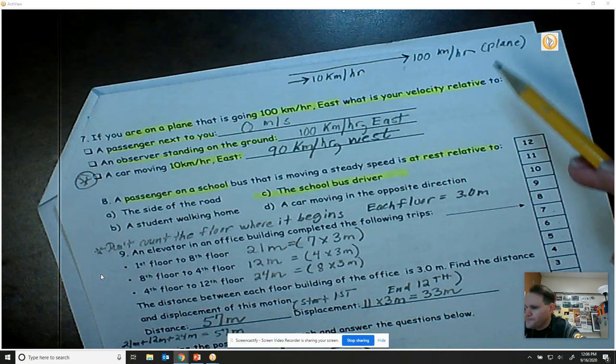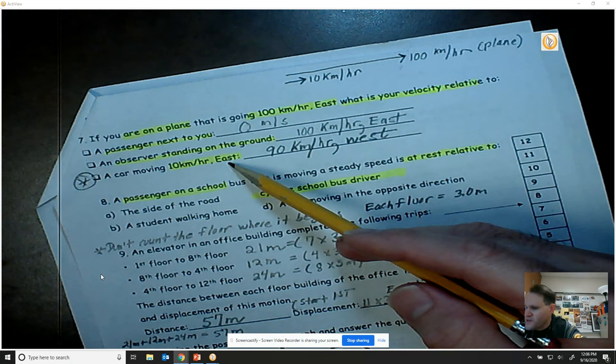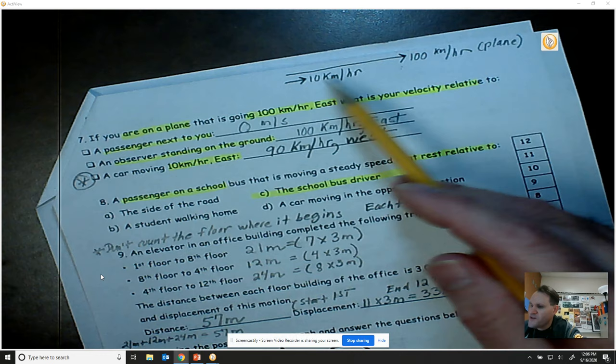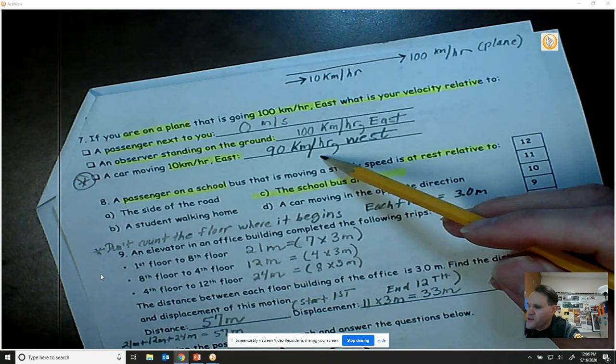Now, what about a car moving? What would be your velocity relative to a car moving at 10 kilometers per hour going to the east? Well, it's going to be 90 kilometers per hour. You have to take the difference of the two. So from someone in a car, they're going to look at the plane. The plane's going to be moving 90 kilometers per hour, but it's going to be as if it's going the opposite direction.